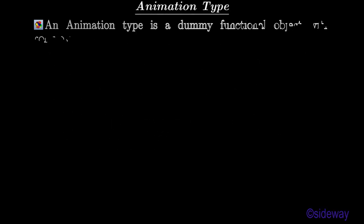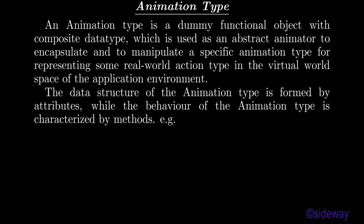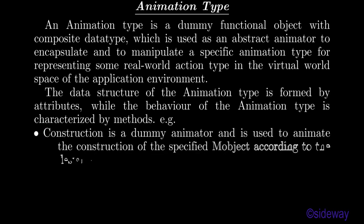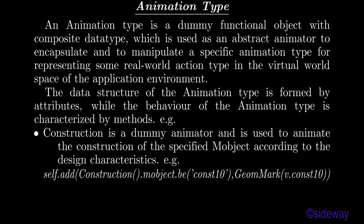An animation type is a dummy functional object with composite data type, used as an abstract animator to encapsulate and manipulate a specific animation type for representing some real-world action type in the virtual world space. Its data structure is formed by attributes and its behavior is characterized by methods. For example, Construction is a dummy animator used to animate the construction of the specified object according to its design characteristics. For example: self.add(Construction.mobj.b.const10, geometry_mark.b.const10).